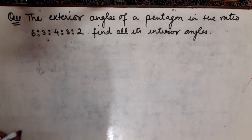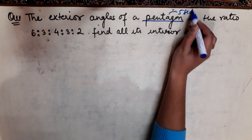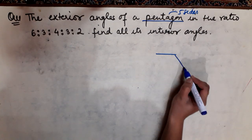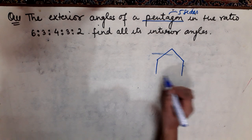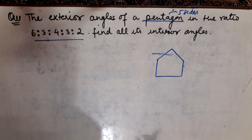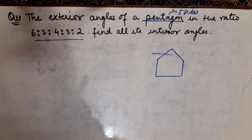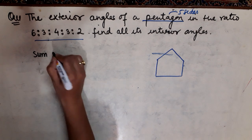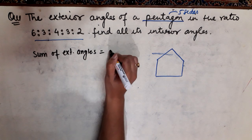The next question: the exterior angles of a pentagon are in a given ratio. A pentagon has five sides. You should always remember that the sum of all exterior angles is always 360 degrees — whether it is a quadrilateral, pentagon, hexagon, or any 2D geometrical figure.